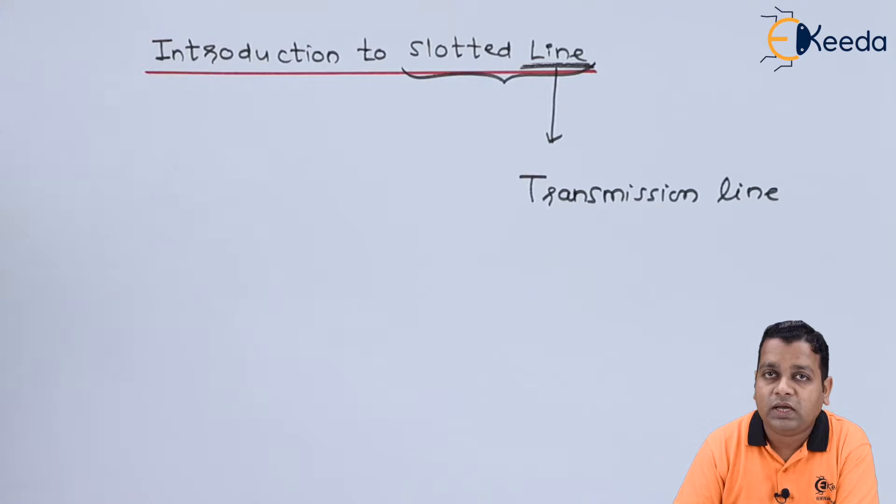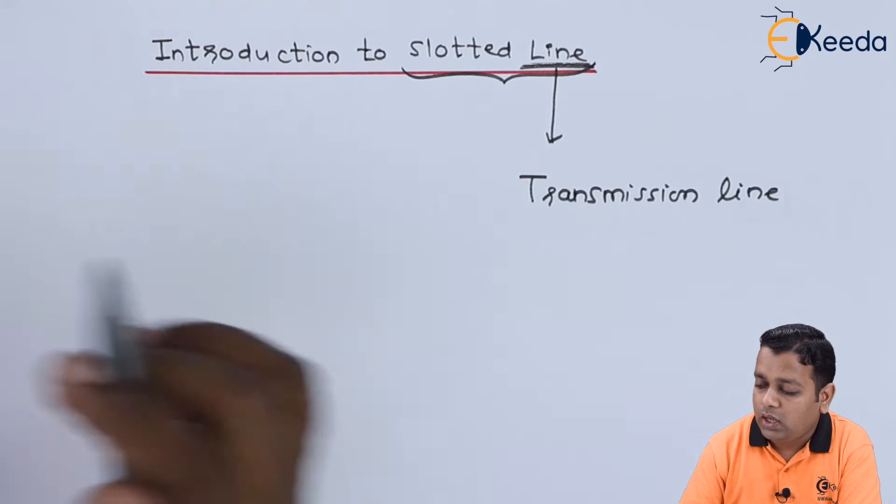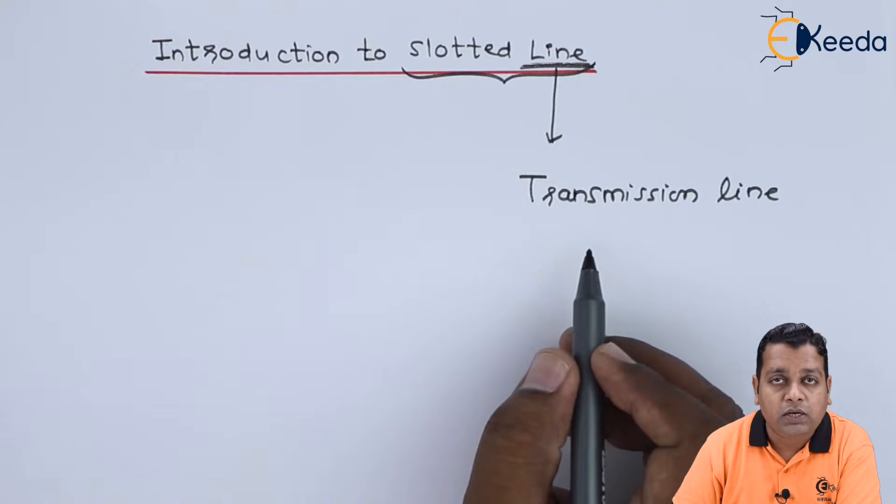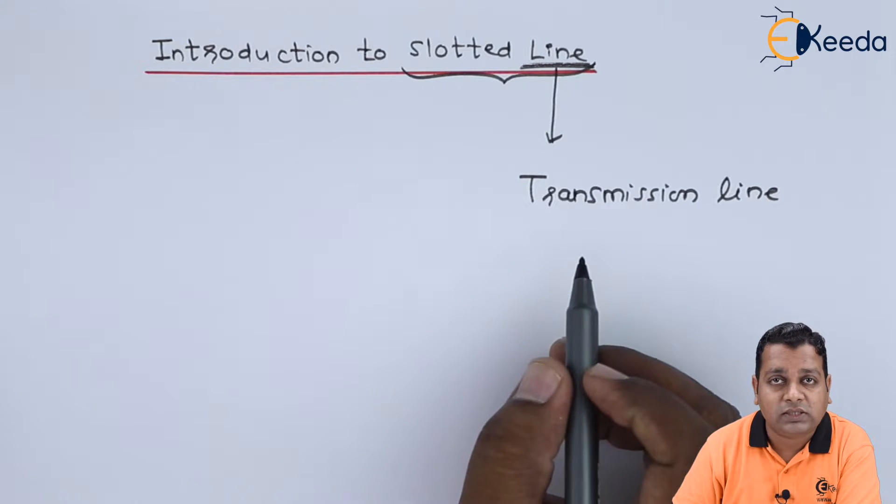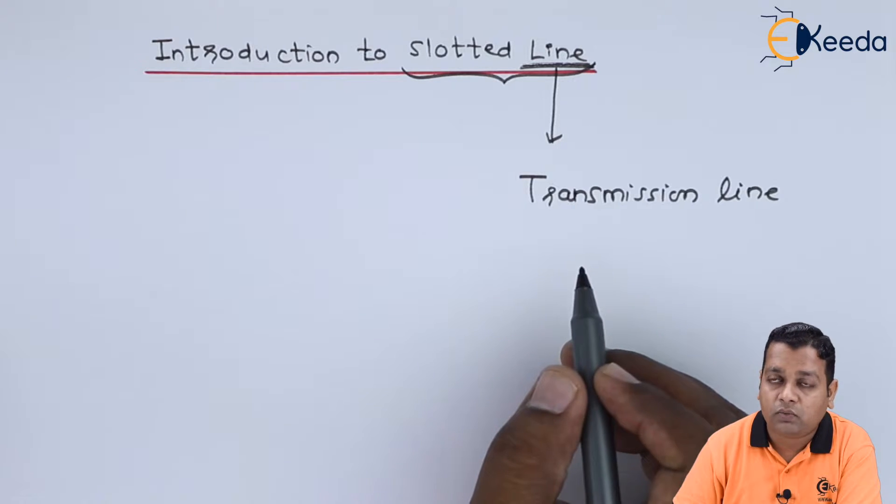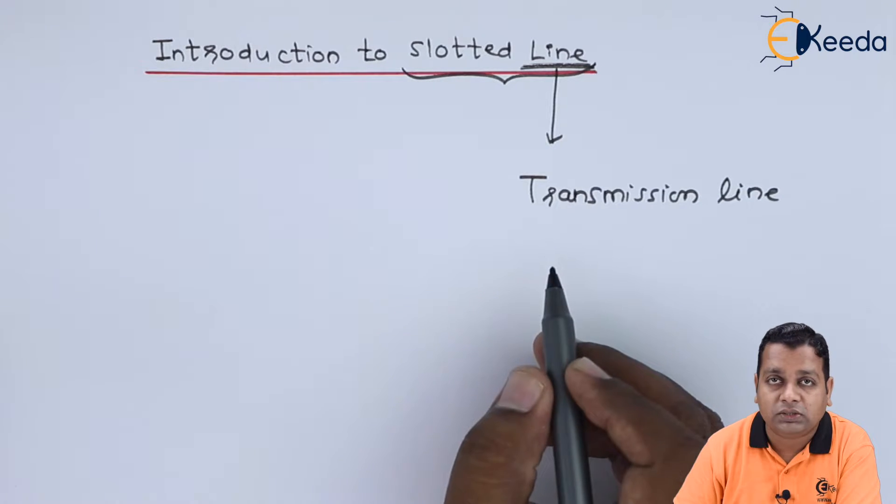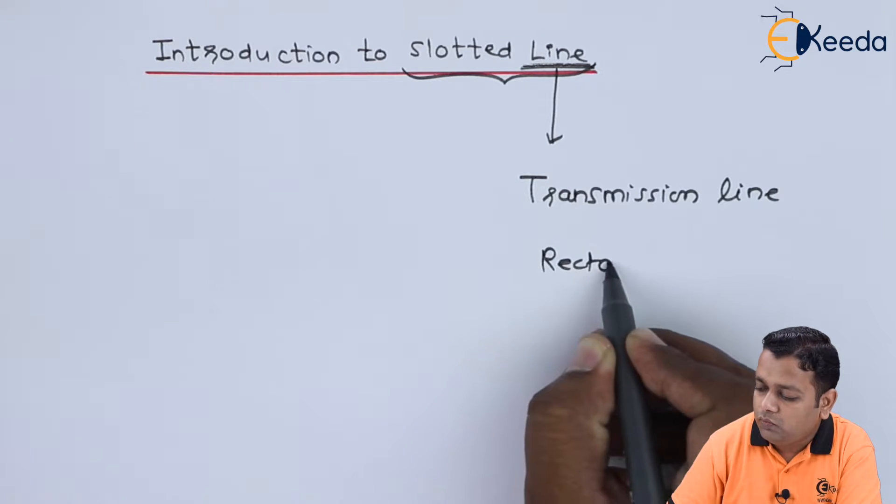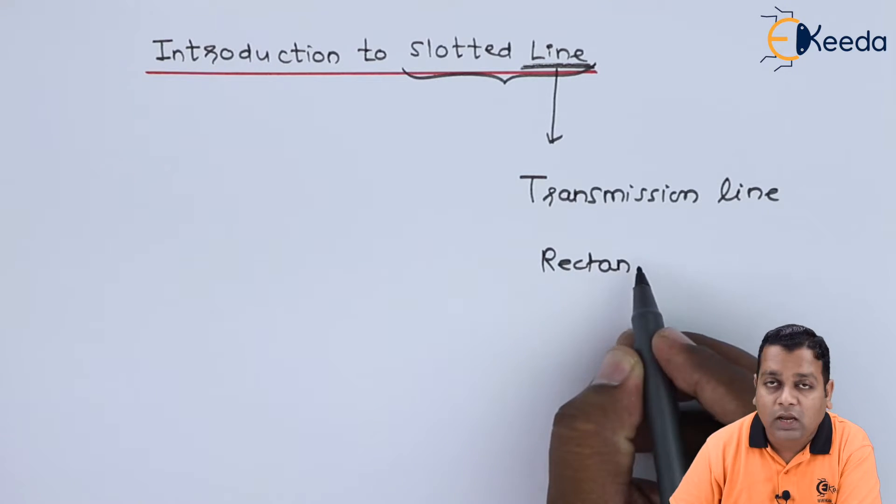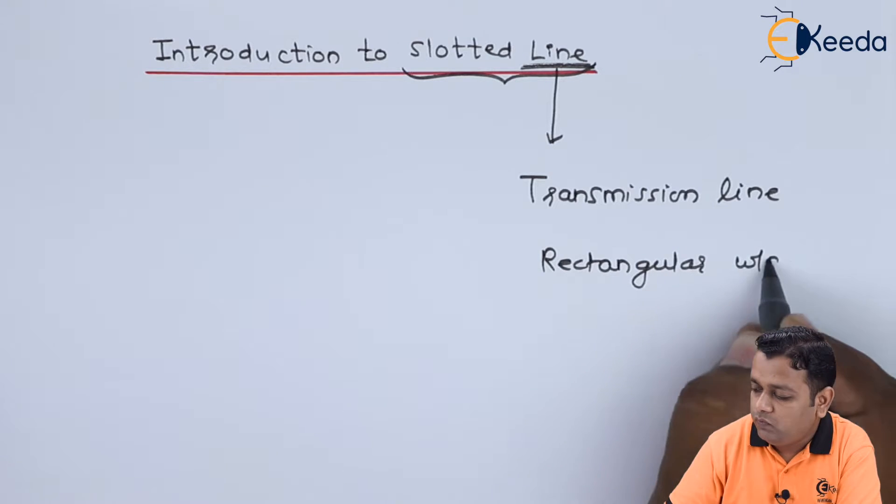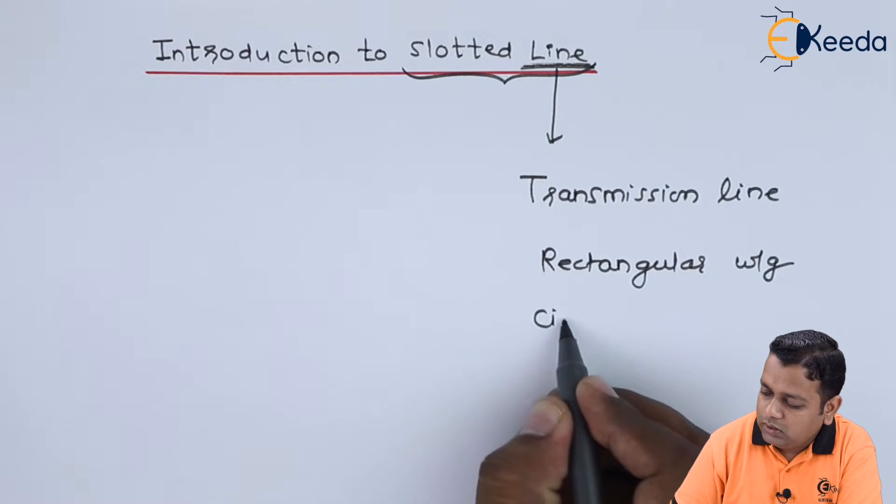The various kinds of transmission lines we have gone through include the two-conductor transmission line, the multi-conductor transmission line, and the single-conductor transmission line. The popular ones for the microwave test bench and microwave engineering applications are the waveguides. We can have either rectangular cross-section rectangular waveguide or circular waveguide.